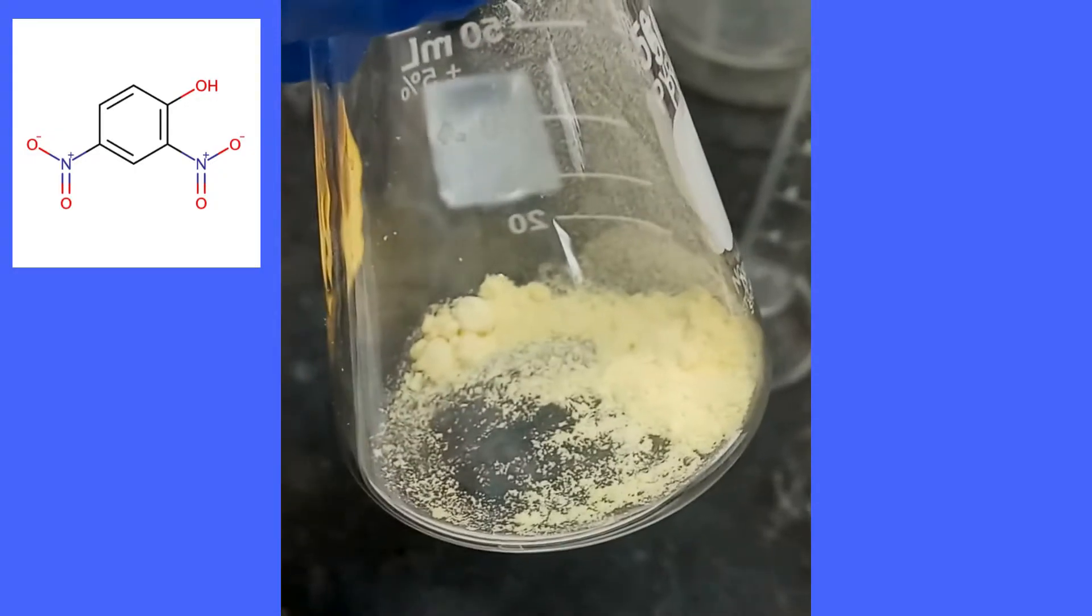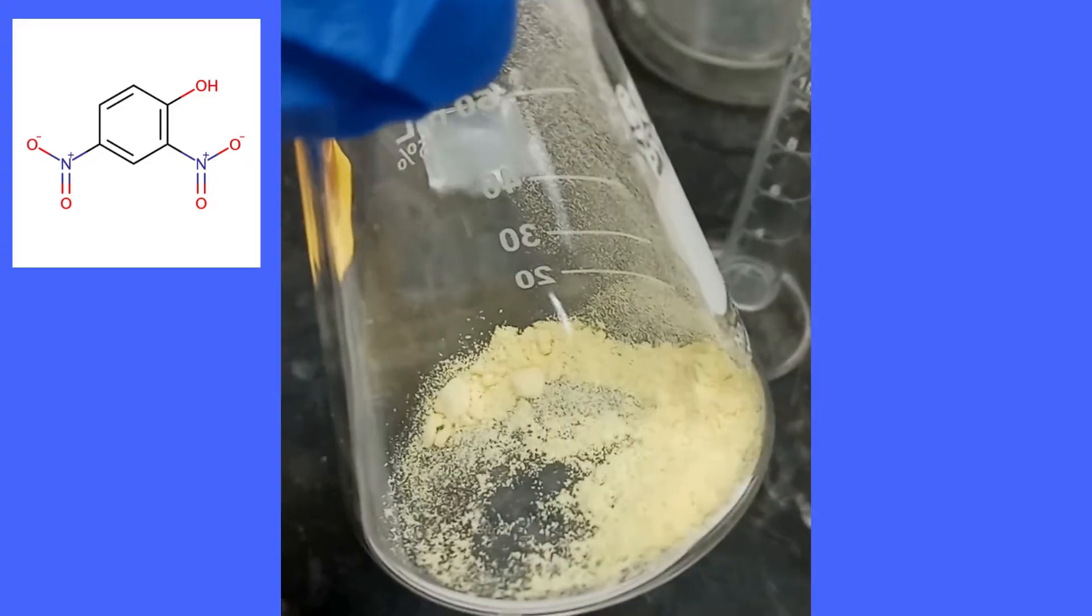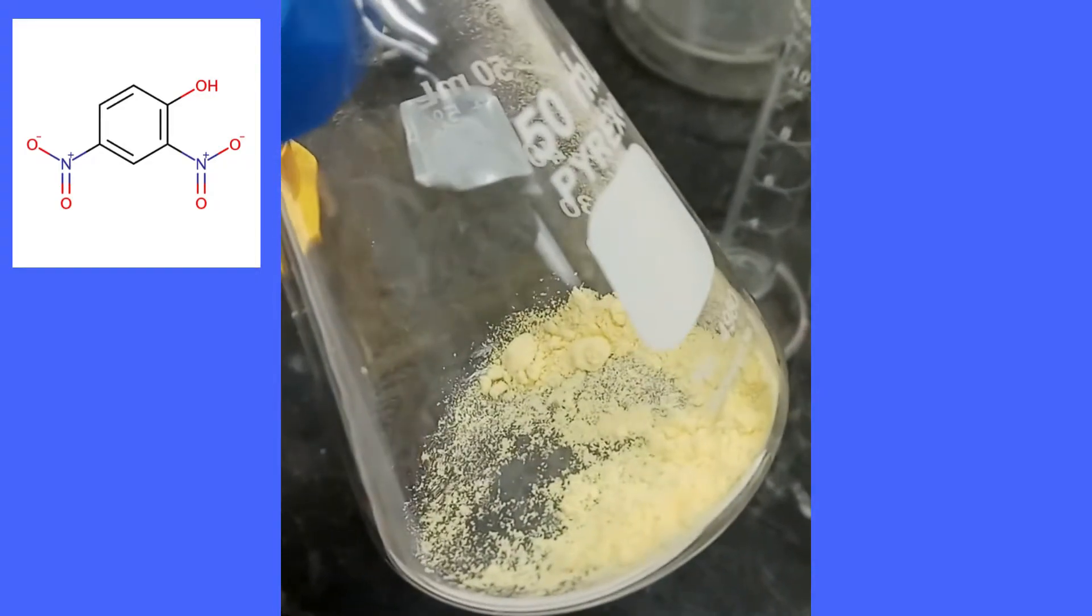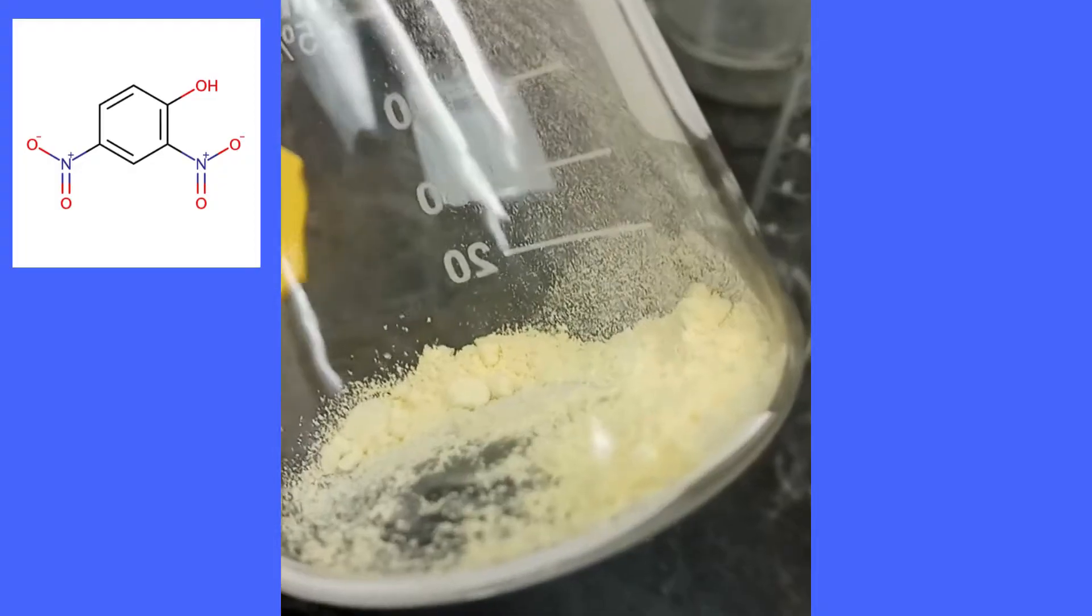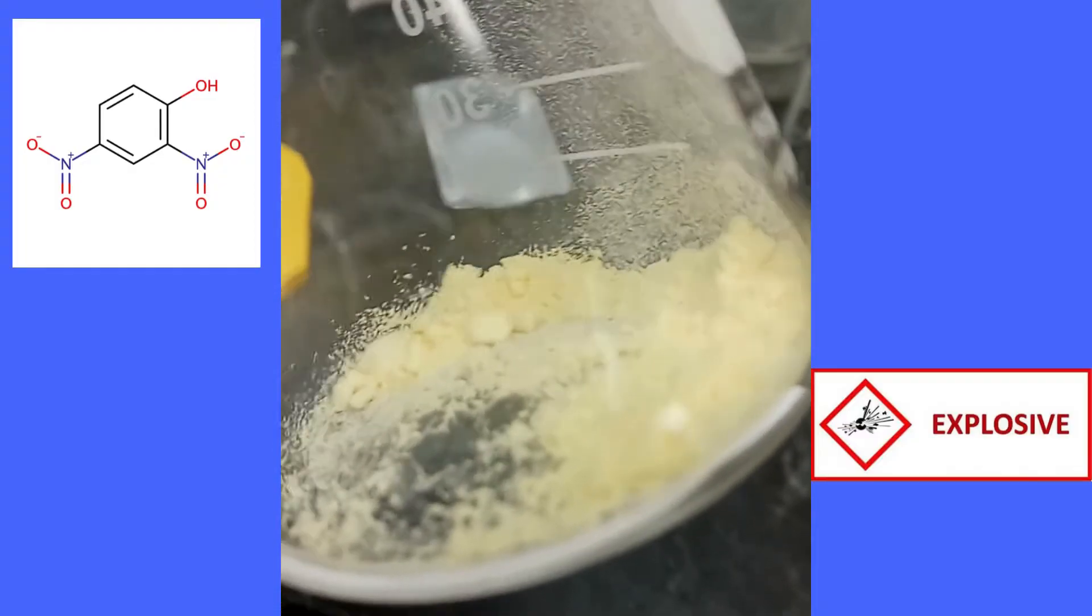We started off adding 600 mg of 2,4-dinitrophenyl into a 50 ml Erlenmeyer flask. The powder actually contains 20% water so it doesn't explode, and so we've got to get rid of it.